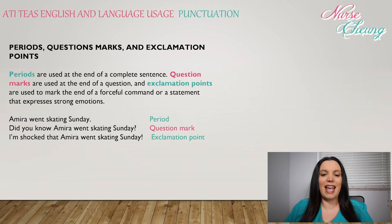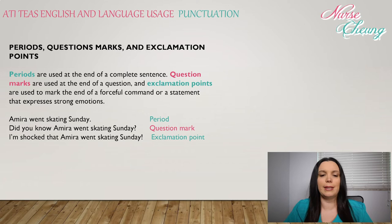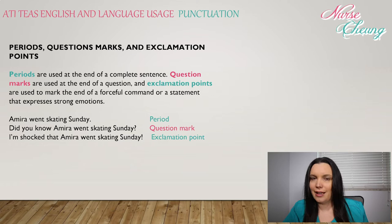Periods are used to end a complete sentence. Question marks are used to end a question, and exclamation points are used to mark the end of a forceful command or a statement that expresses strong emotions. For example: 'A mirror went skating Sunday.' ends with a period. 'Did you know a mirror went skating Sunday?' ends with a question mark. And 'I'm shocked that a mirror went skating Sunday!' ends with an exclamation point.